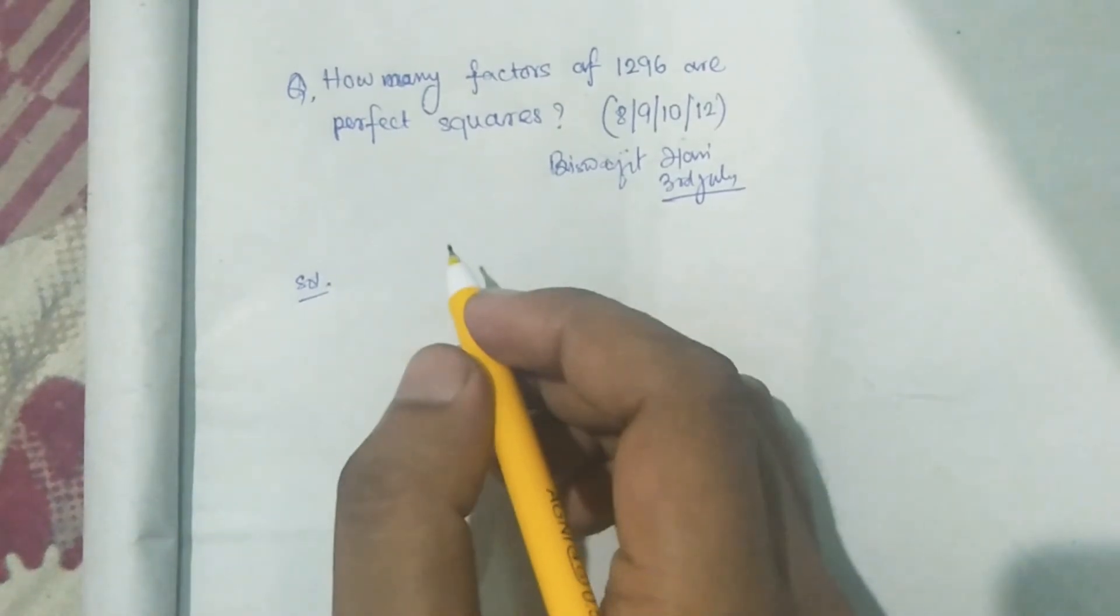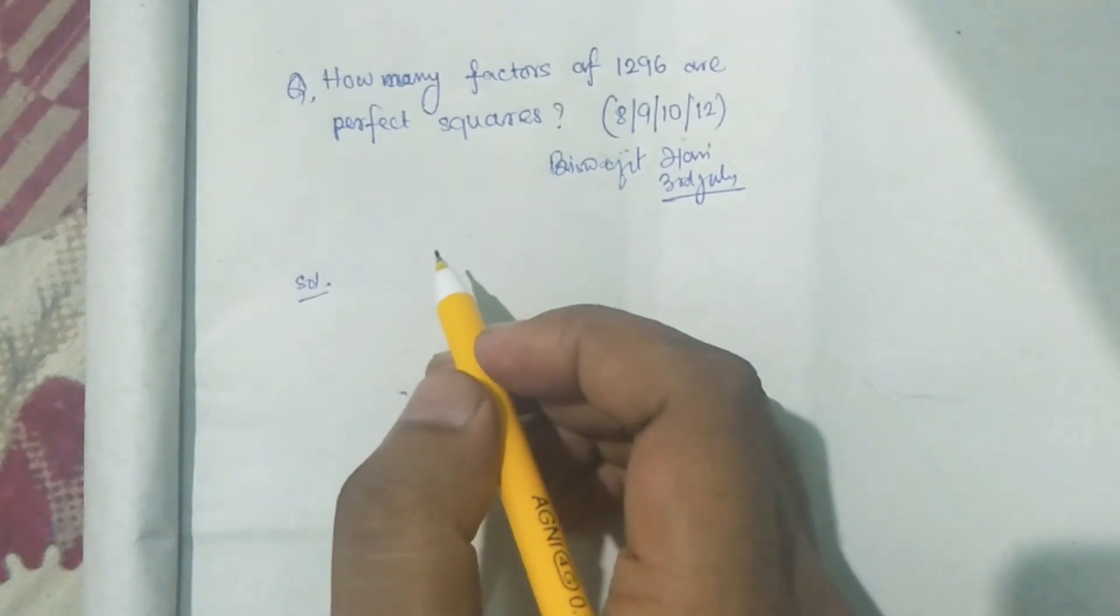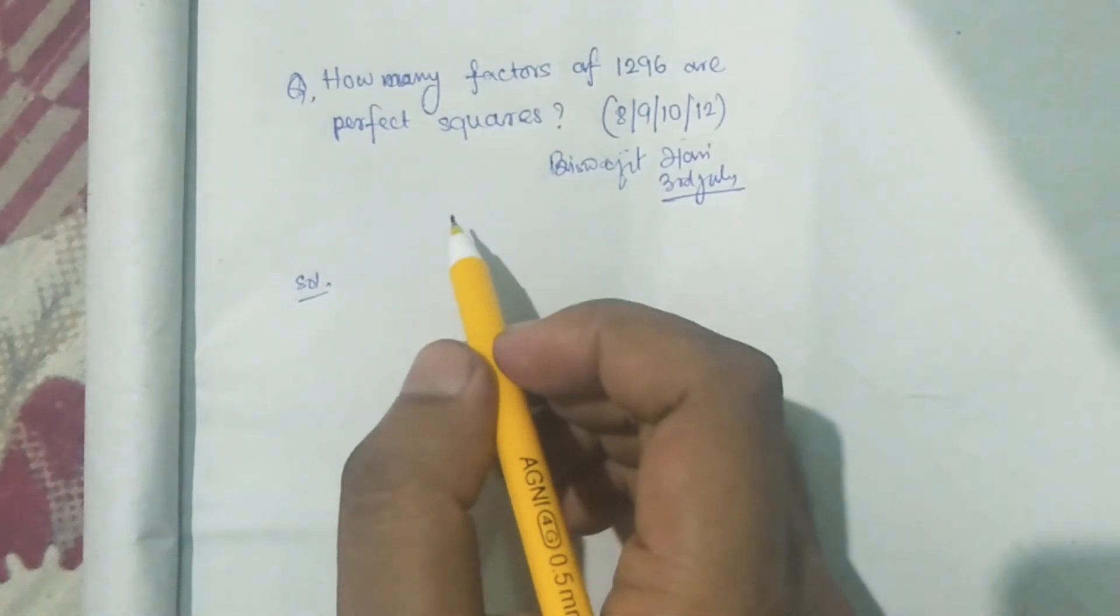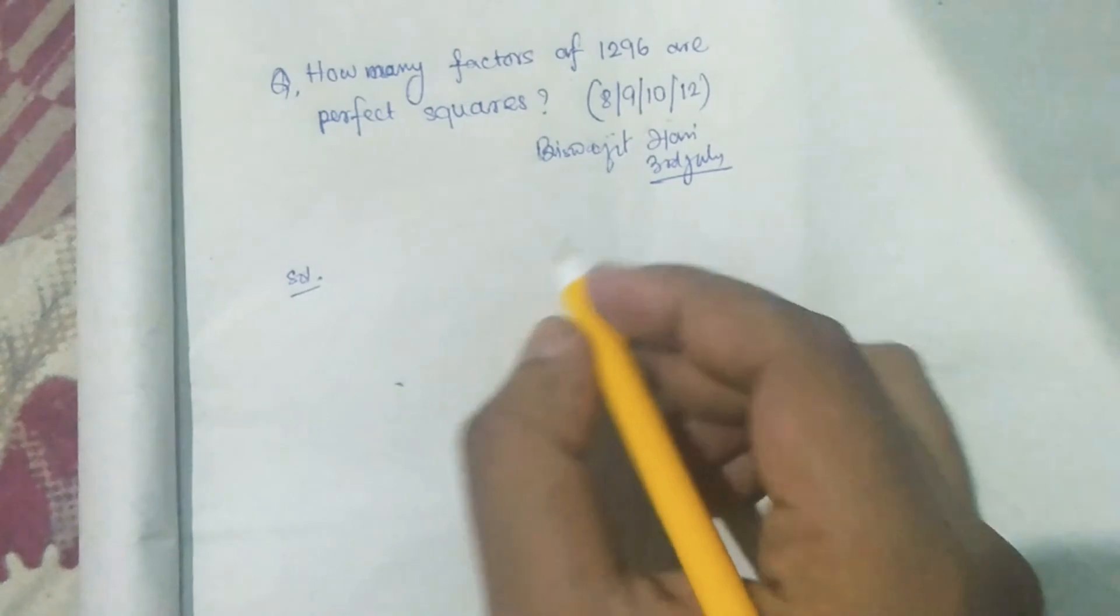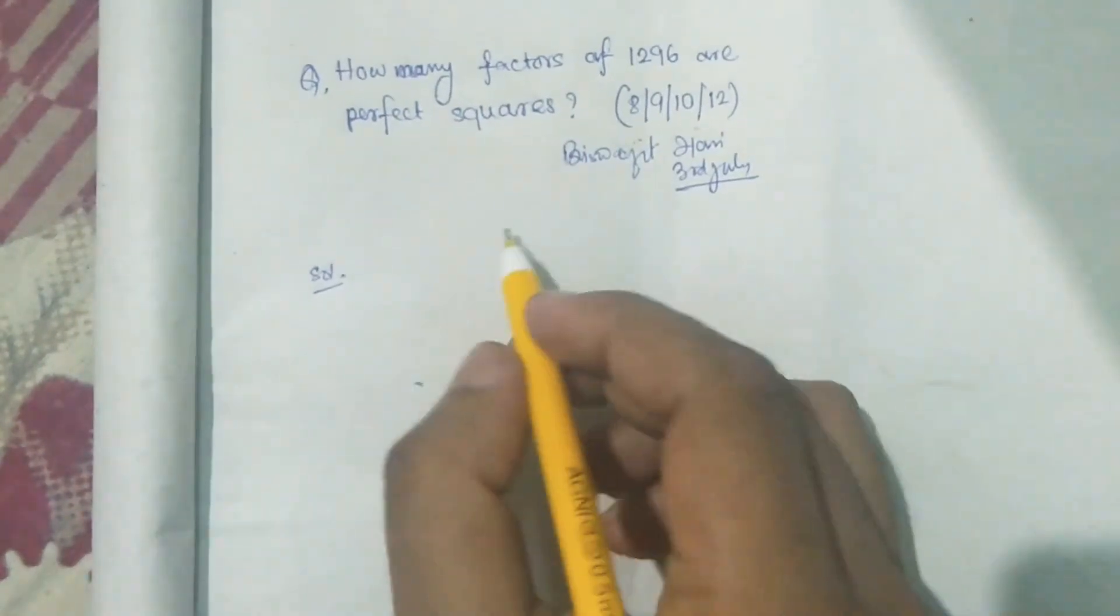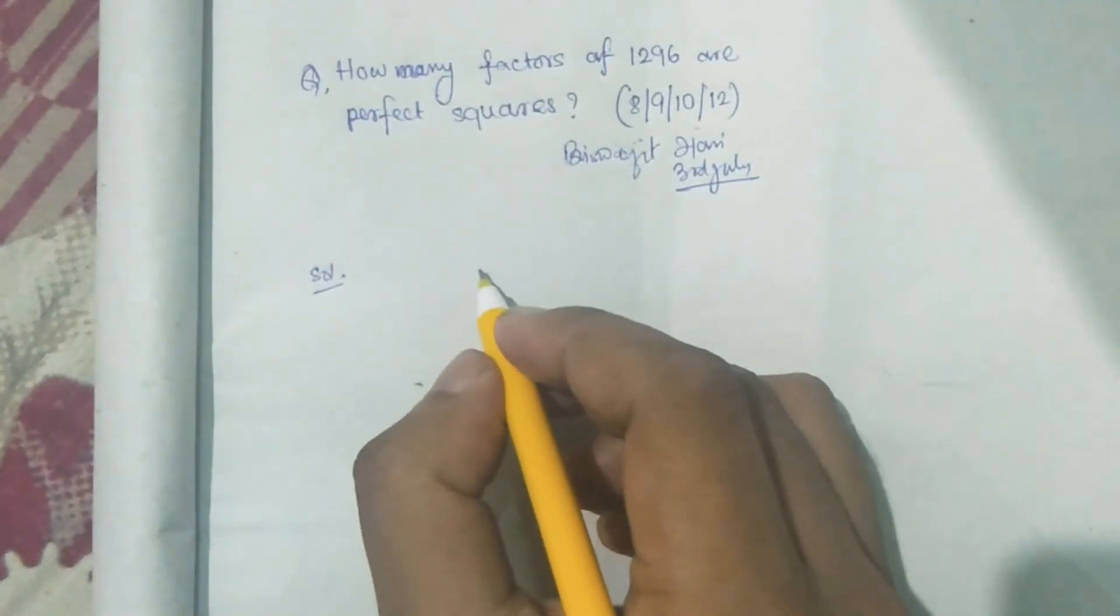How many factors of 1296 are perfect square? So, let's check. At first, we have to find the factor of 1296.